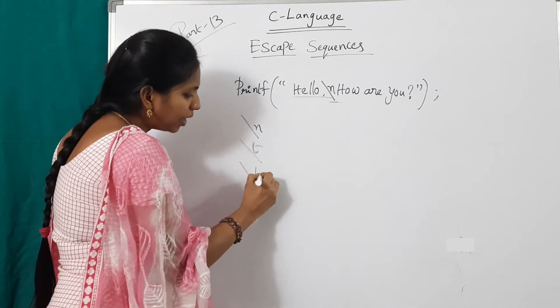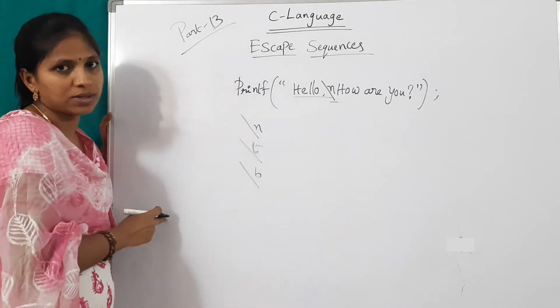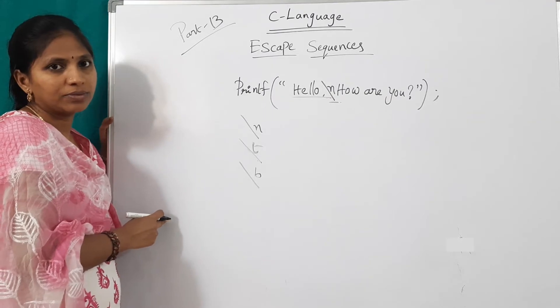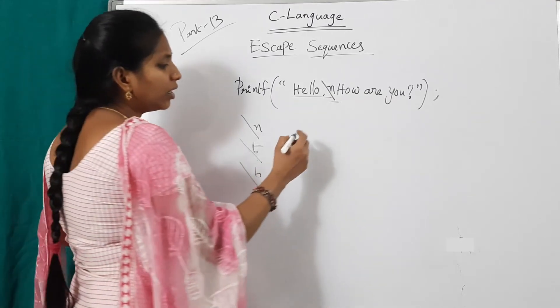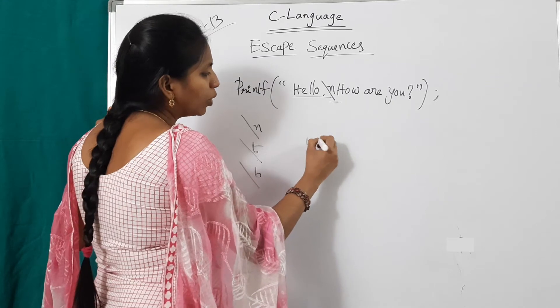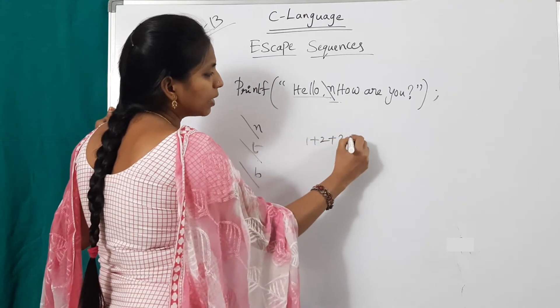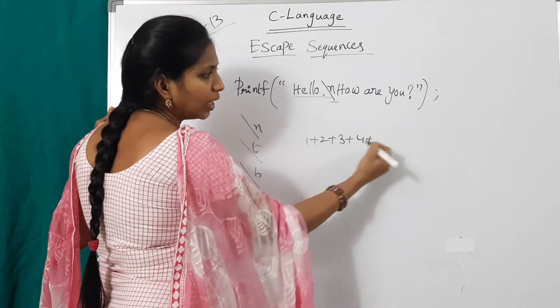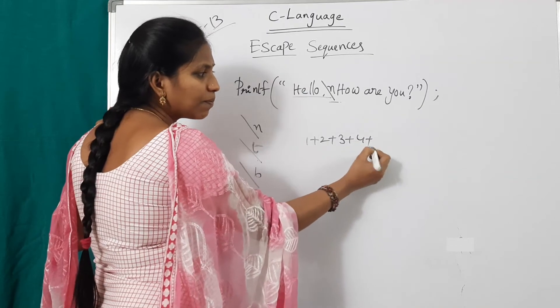And slash b. Slash b is for backspace. For suppose in the output of a program, I want to print like this: one plus two plus three plus four plus and so on. At last, there is a plus symbol.